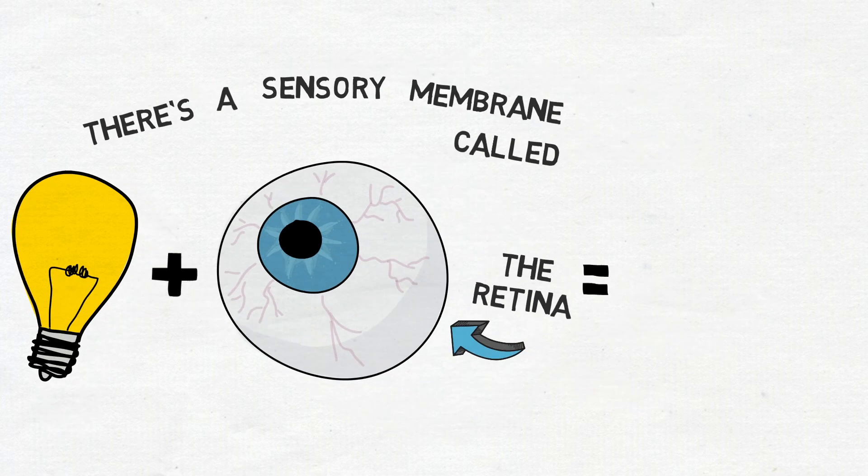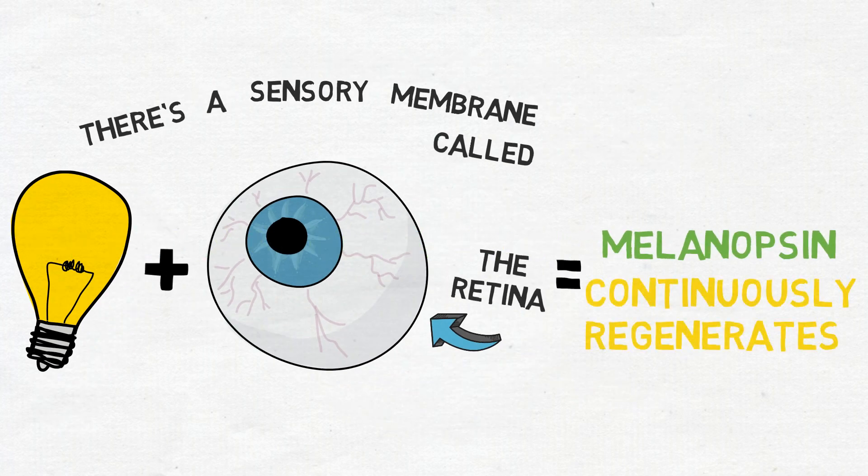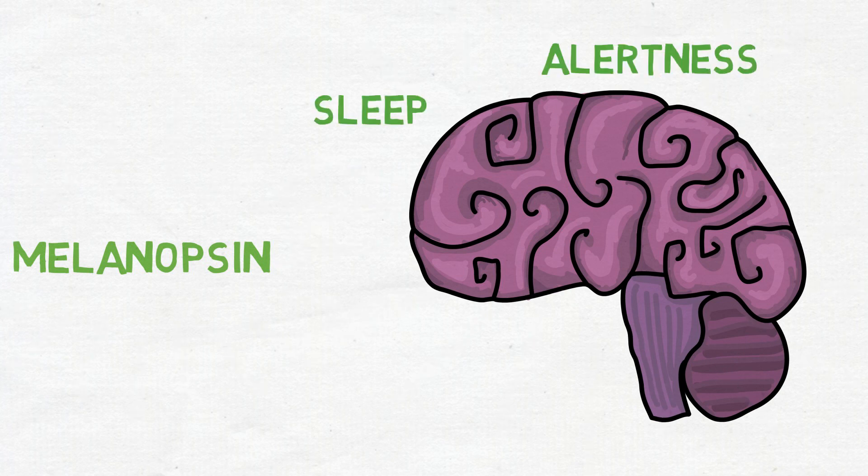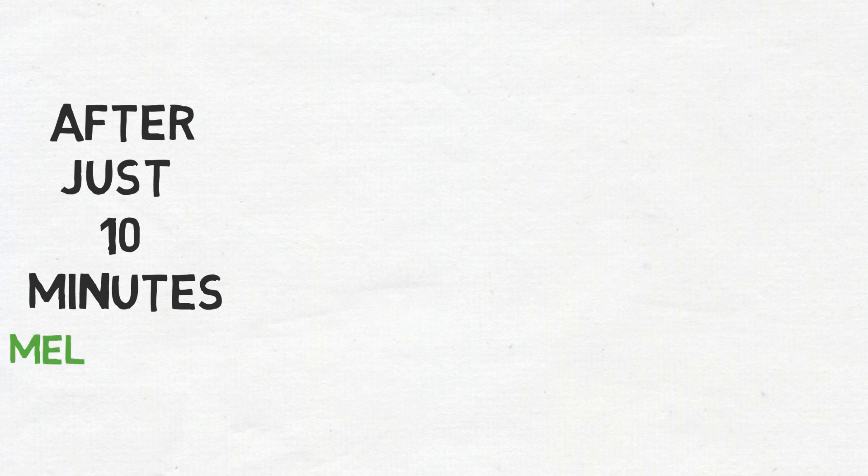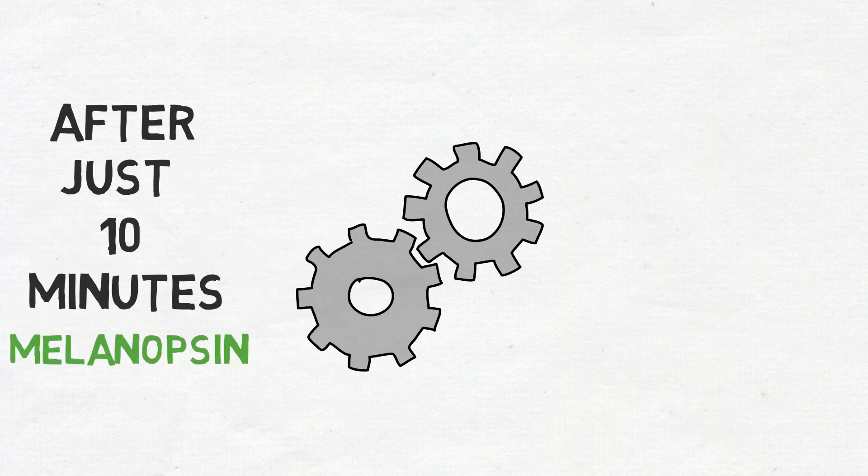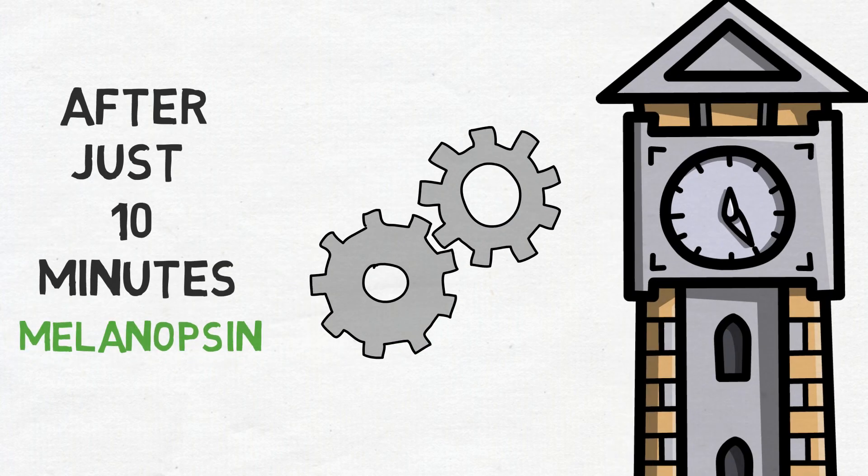When these cells receive light, this is what the scientists discovered: a protein called melanopsin regenerates continuously within them. Now this protein signals the brain to regulate sleep, alertness, and consciousness.